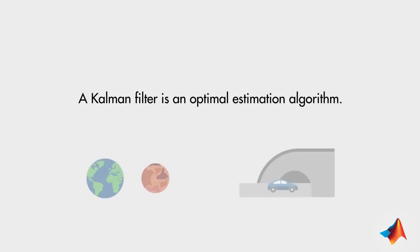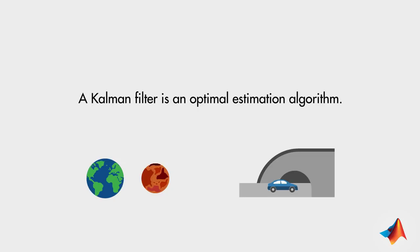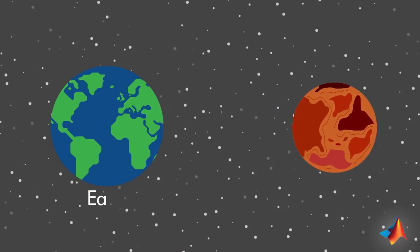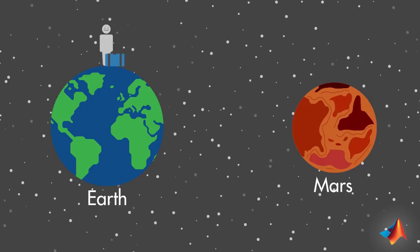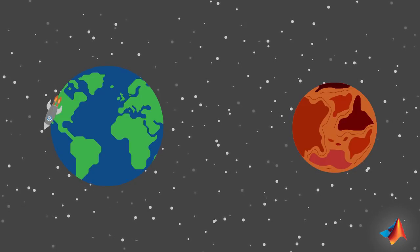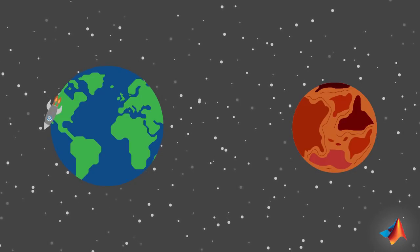Today, we'll discuss two examples that demonstrate common uses of Kalman filters. In the first example, we'll see how a Kalman filter can be used to estimate a system state when it cannot be measured directly. To illustrate this, let's go to Mars before anyone else does.